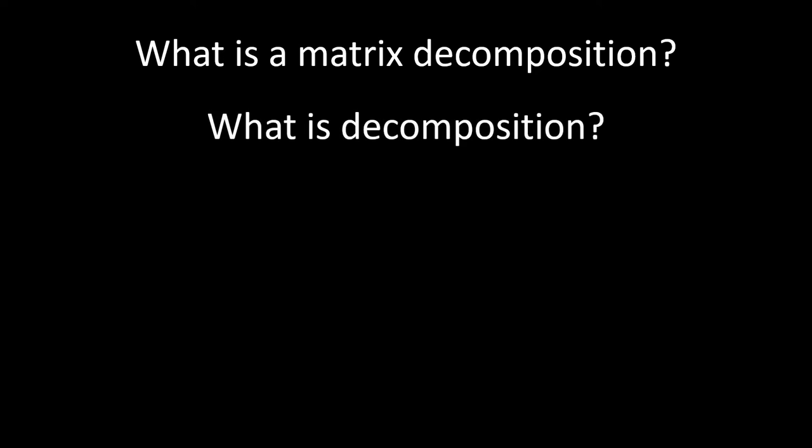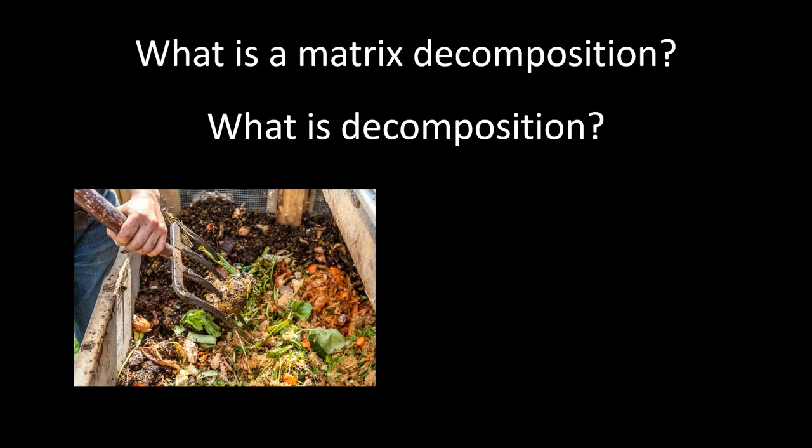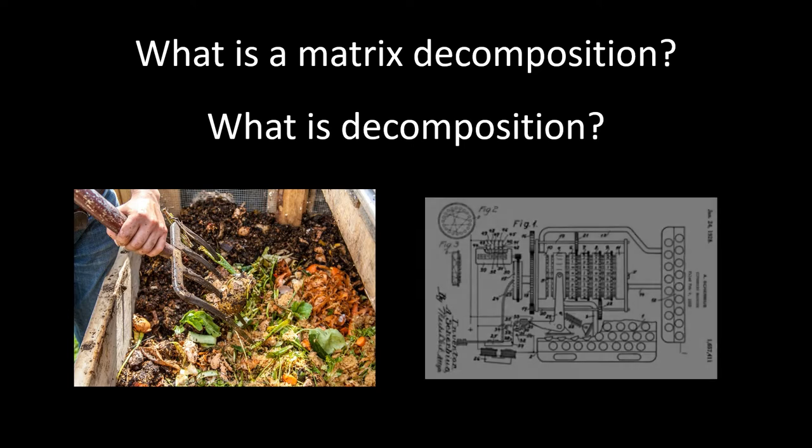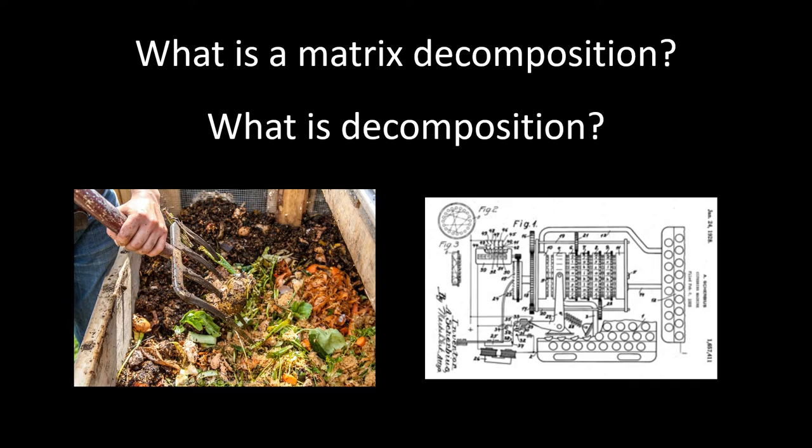You could think about decomposition in the case of composting biologically, where you're taking organic material and breaking it down back into nutrients. Or you could think about it in the engineering sense of breaking down some kind of machine to better understand how it works in sort of a reverse engineering sense. This picture on the right here is actually a picture of the Enigma machine, which was famously cracked during World War II by Alan Turing.